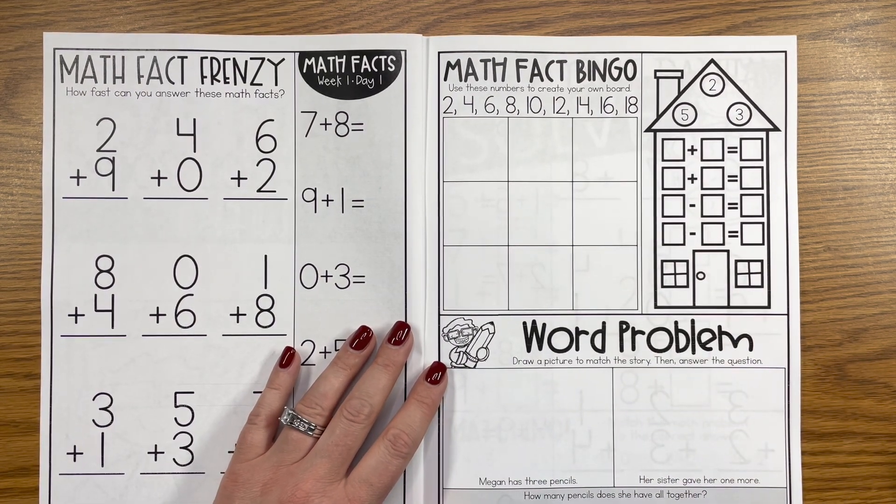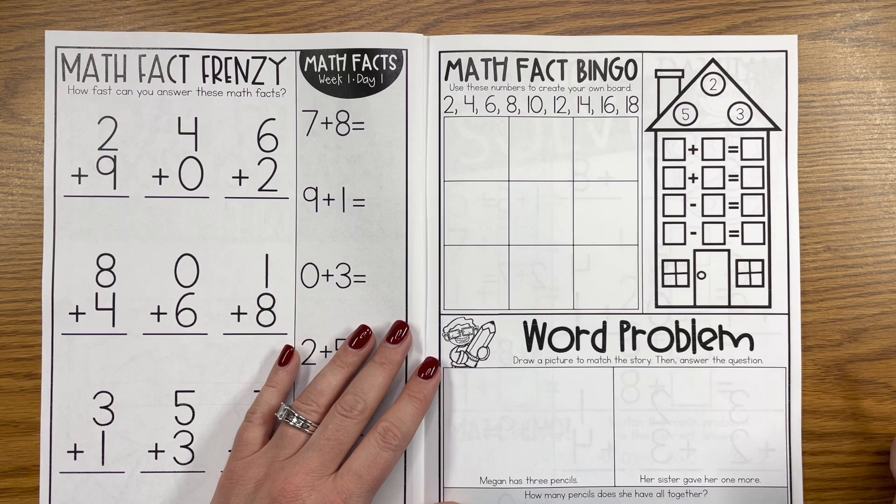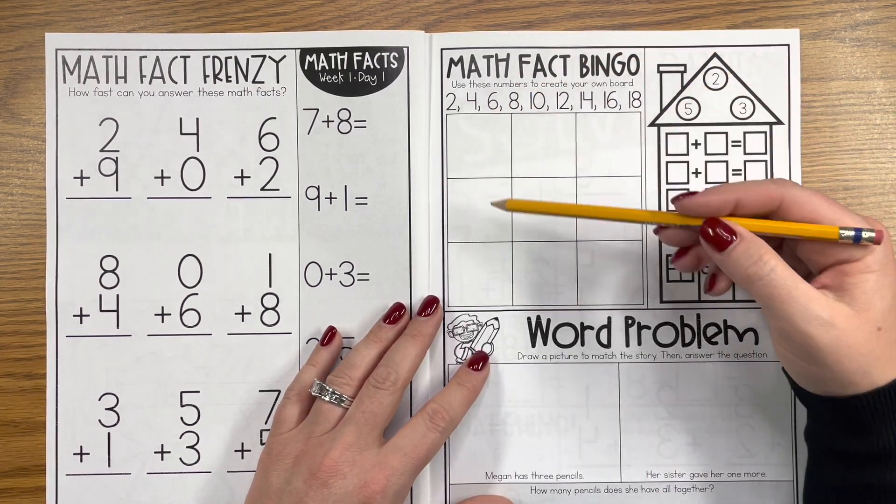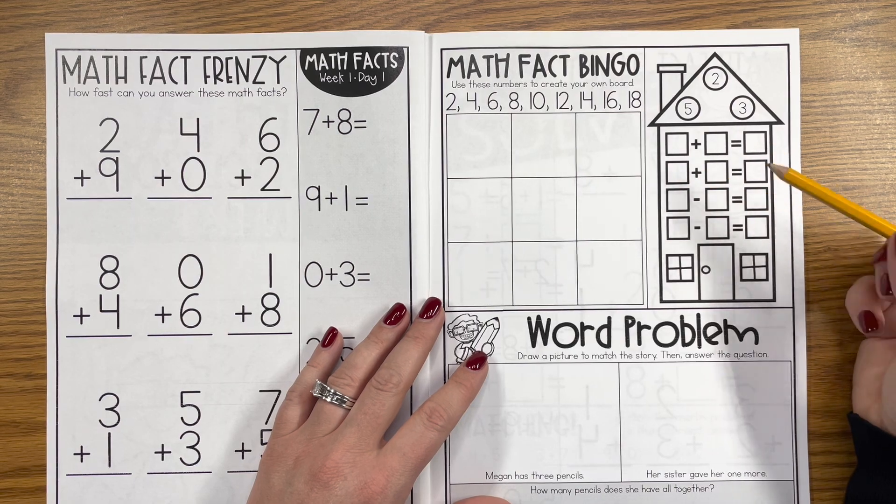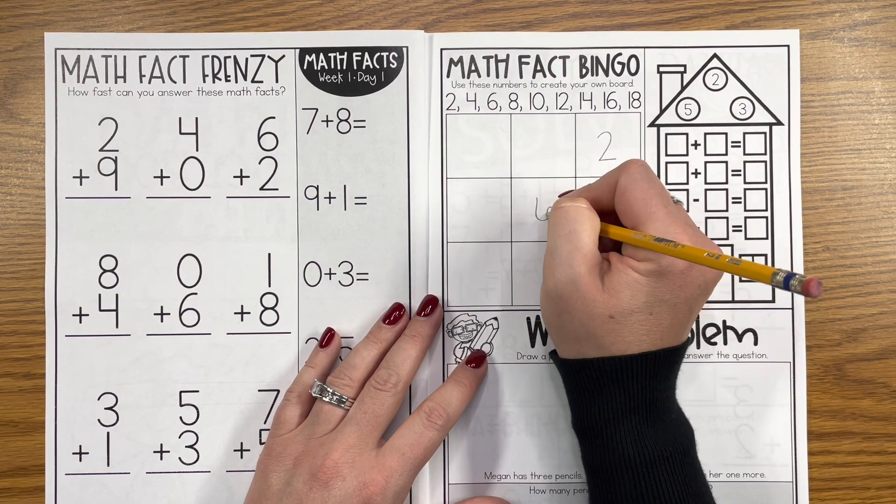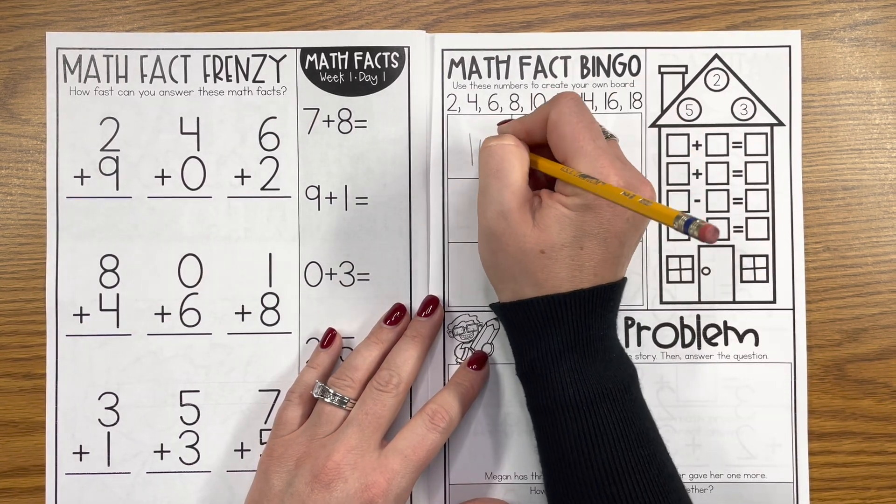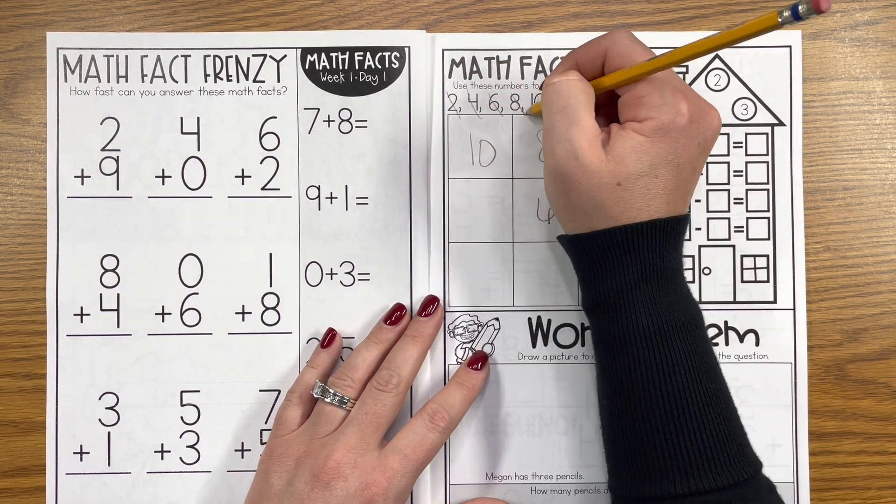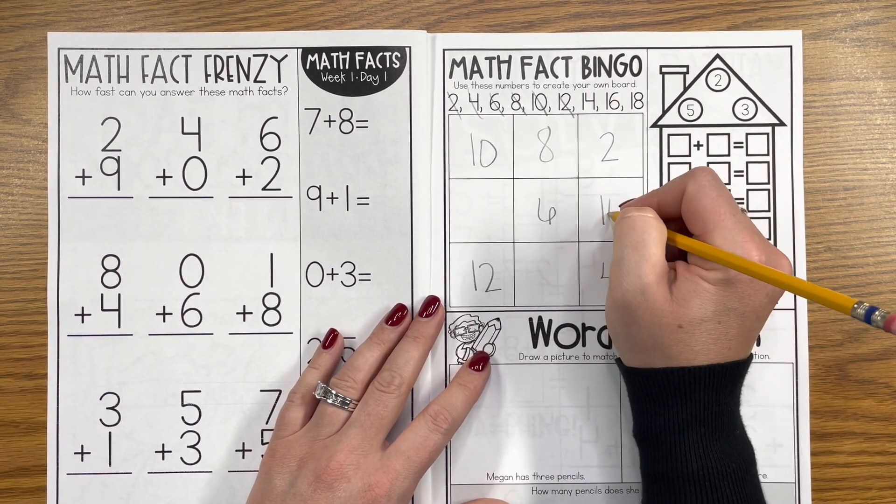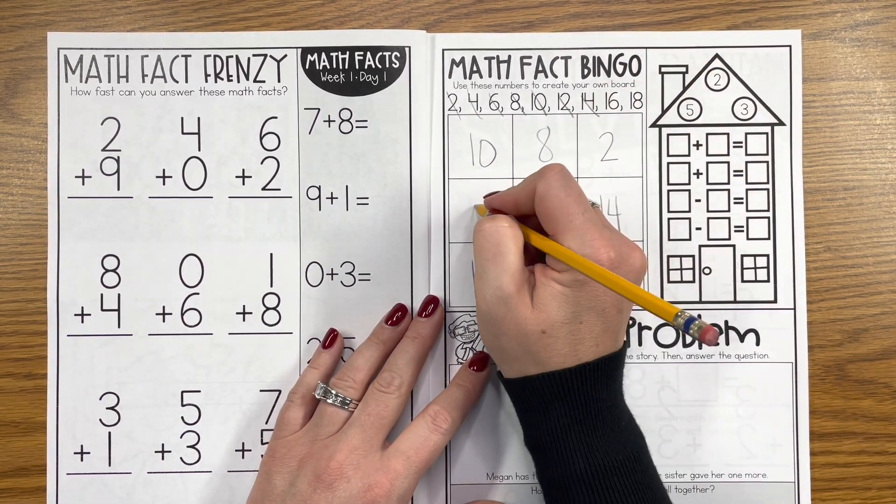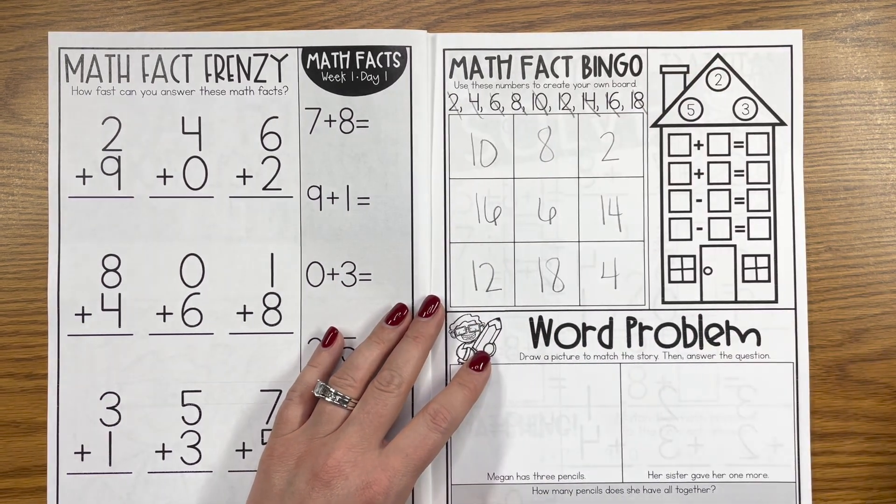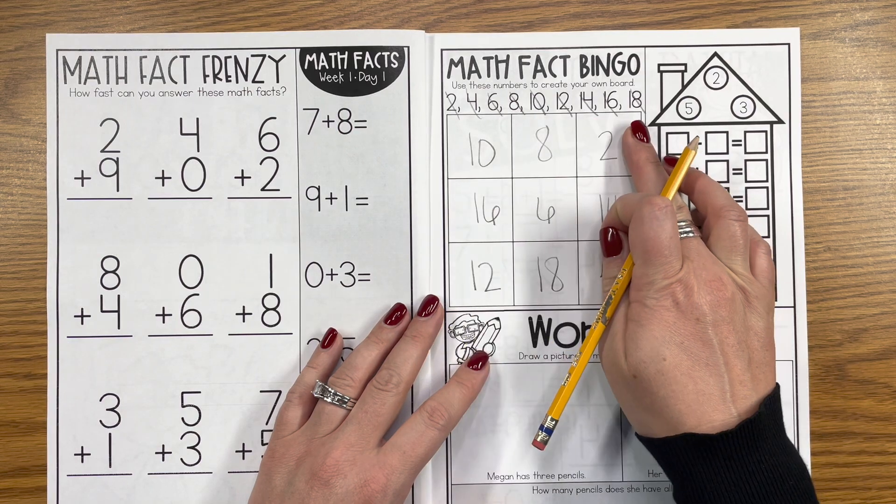On the right-hand side of each booklet will have different activities to practice addition or subtraction in different fun and engaging ways. Here you'll play math fact bingo, so students will just use these numbers to fill out their chart. They can use whatever numbers they want. Sometimes if we're in a pinch I might go through and write these out for them.